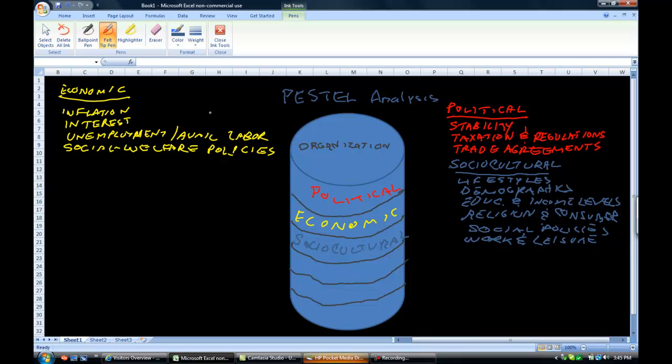We'll grab another color, we'll go on to the next one. Let's grab an orange this time. And the next letter in our acronym is T for technological. So we'll start out over here, technological.